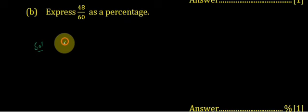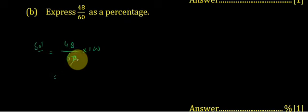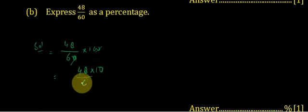Part b: Express 48 upon 60 as a percentage. 48 upon 60 multiplied by 100 for the percentage, or we may cut the 0 from denominator. So it becomes 48 multiplied by 10 divided by 6.